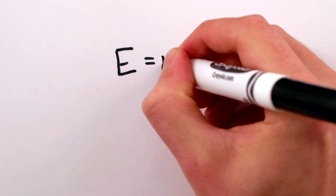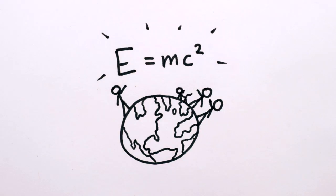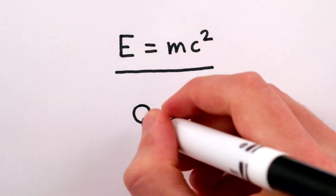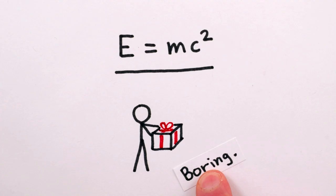E equals mc squared may be the most famous equation in the world, but what you might not know is that it isn't the whole story. It just describes objects that have mass and that aren't moving.